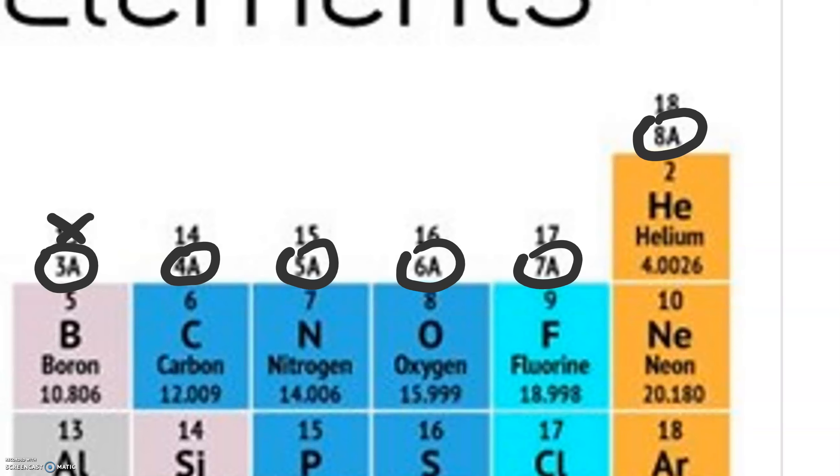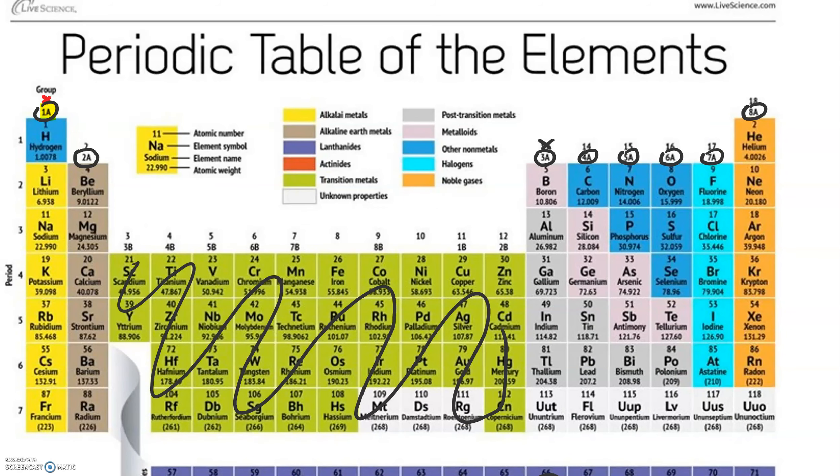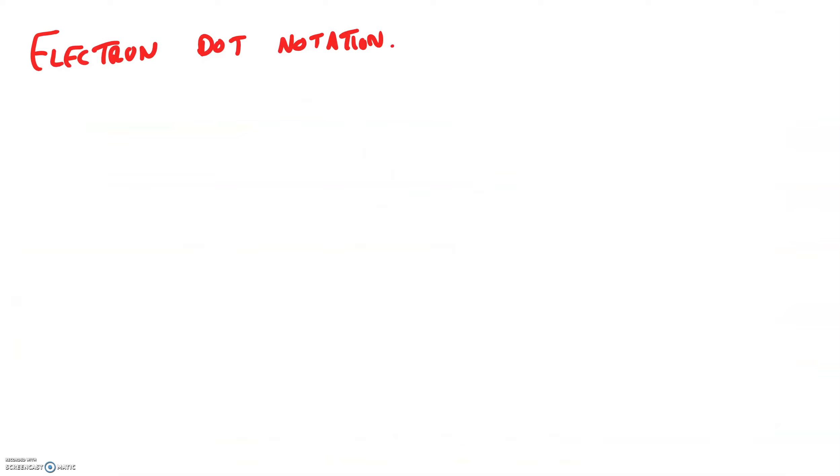This makes it a lot faster. What we're going to do is use a little visual shorthand to indicate how many valence electrons each atom has to work with. This shorthand is called electron dot notation. It's super easy. Here's how it works.